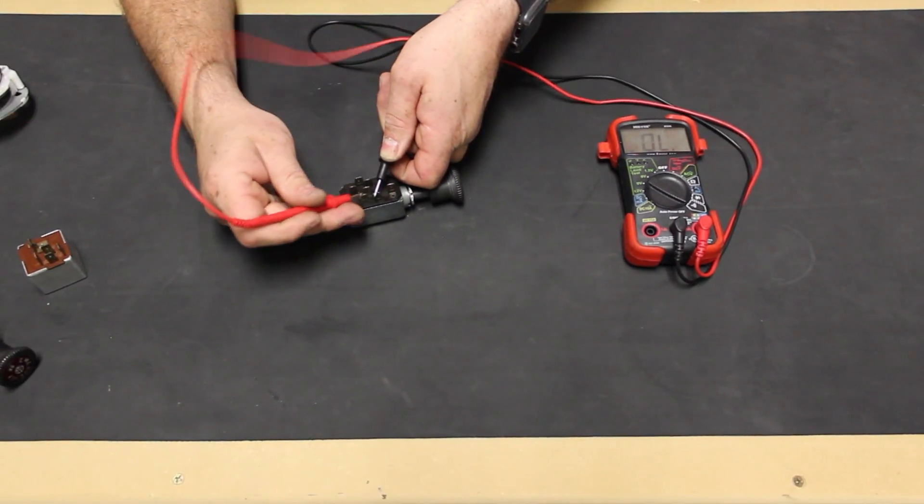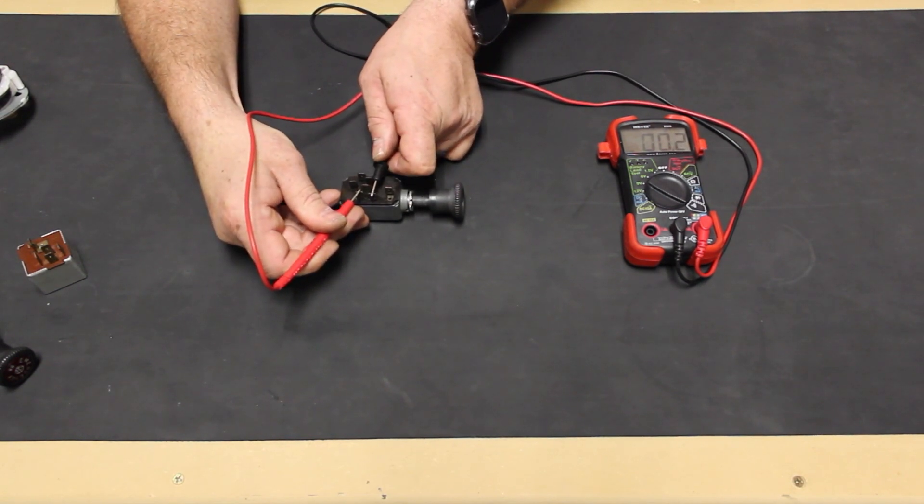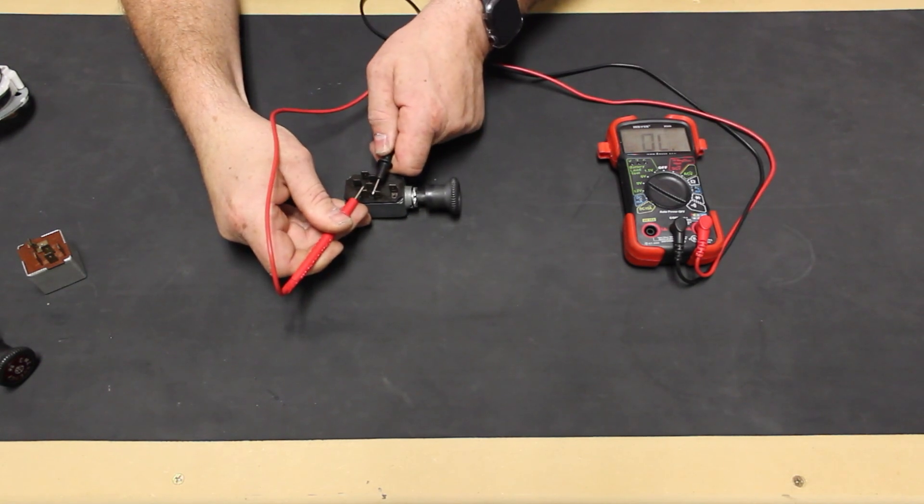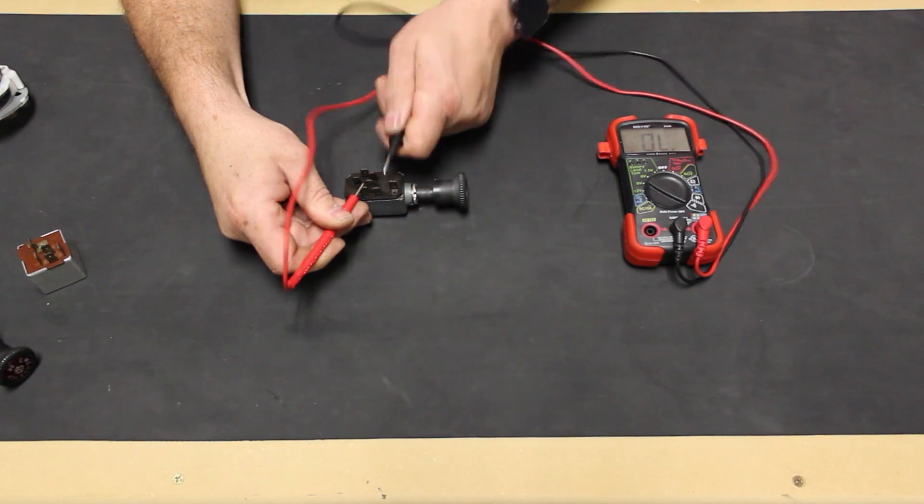So, we move our power lead over from the 30 terminal to the X terminal, and now we have power at the 56 terminal. If we push the knob back into the first position, and still have power at the X terminal, we no longer have power at the 56 terminal. Pulling the knob out once more, and we do have power again.